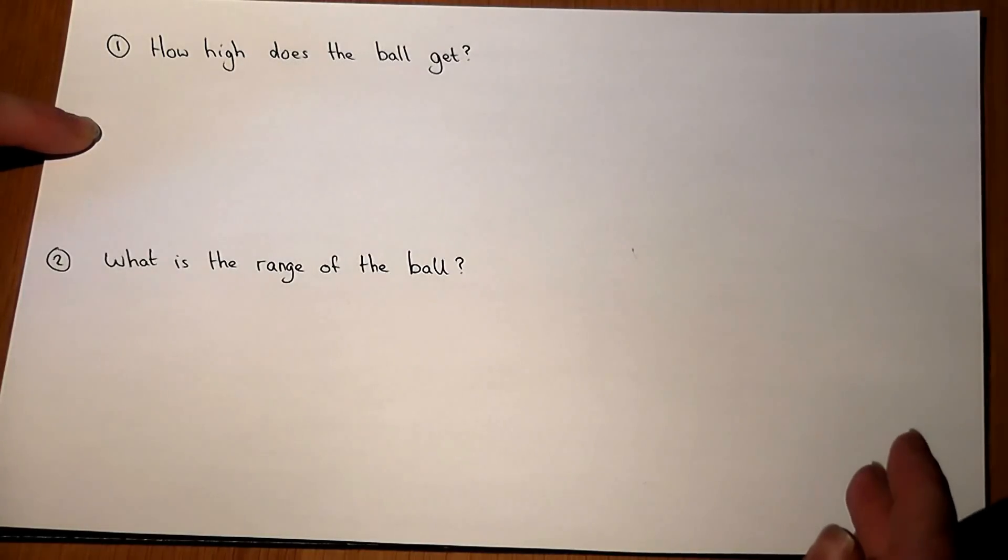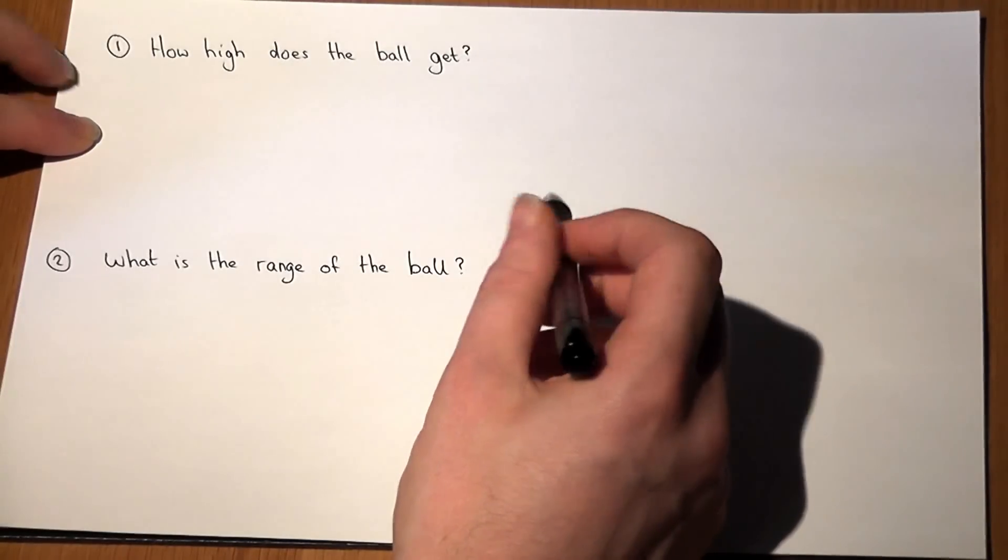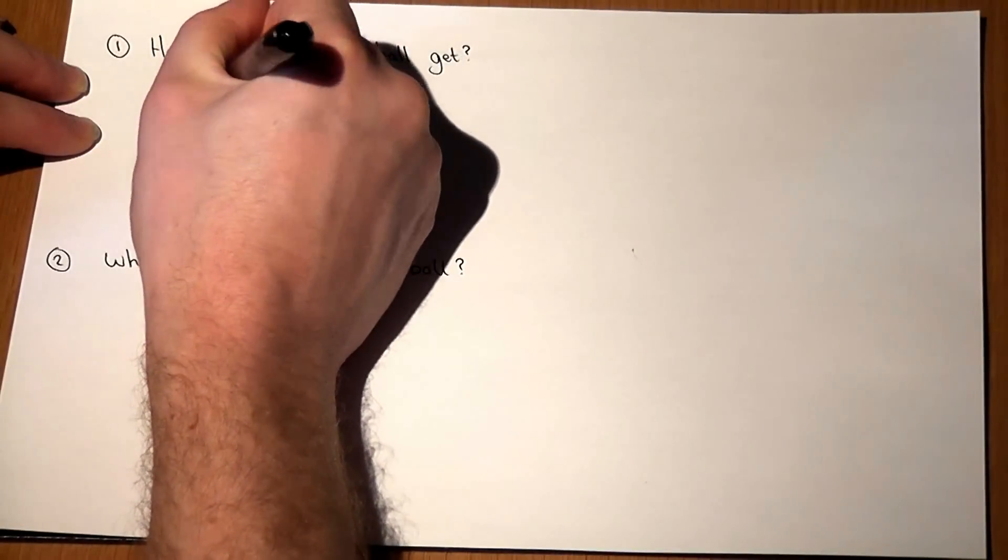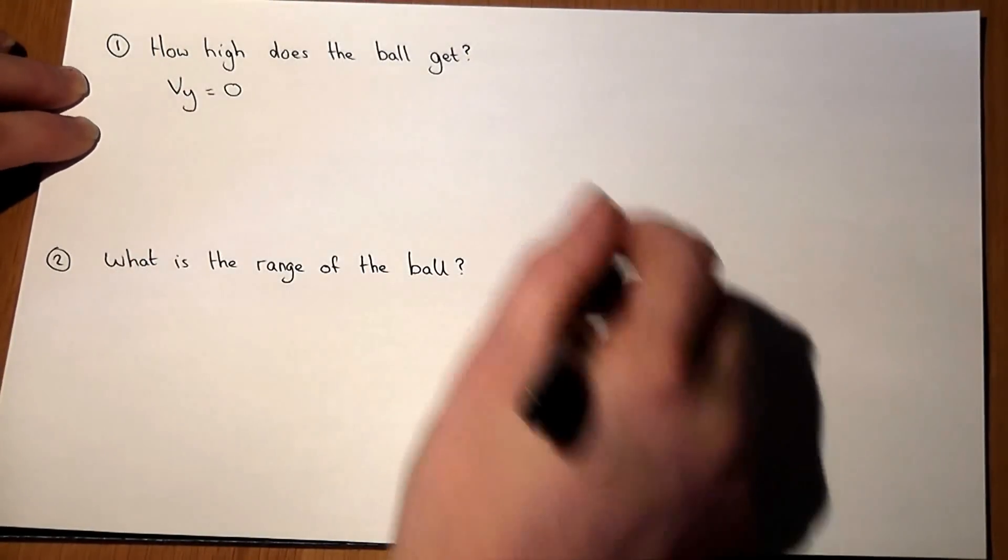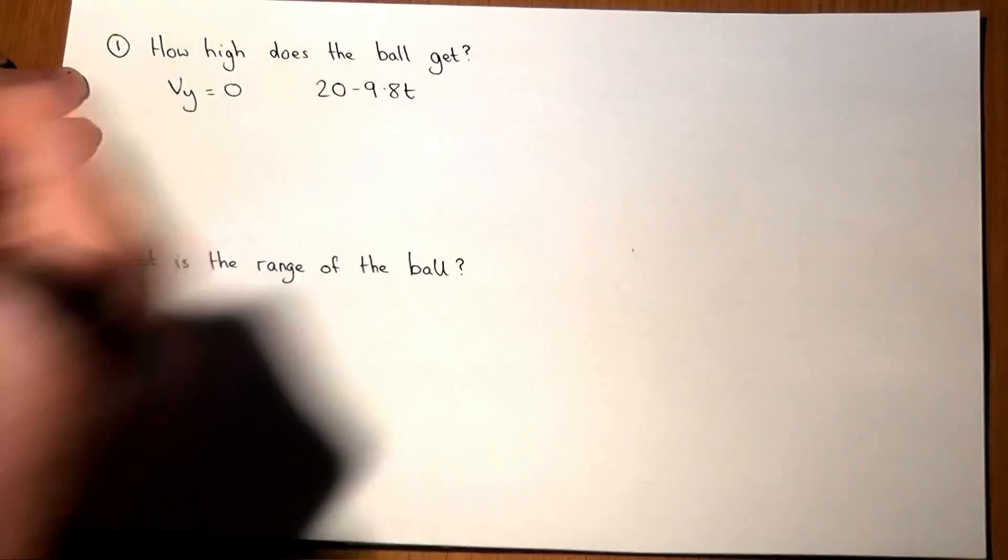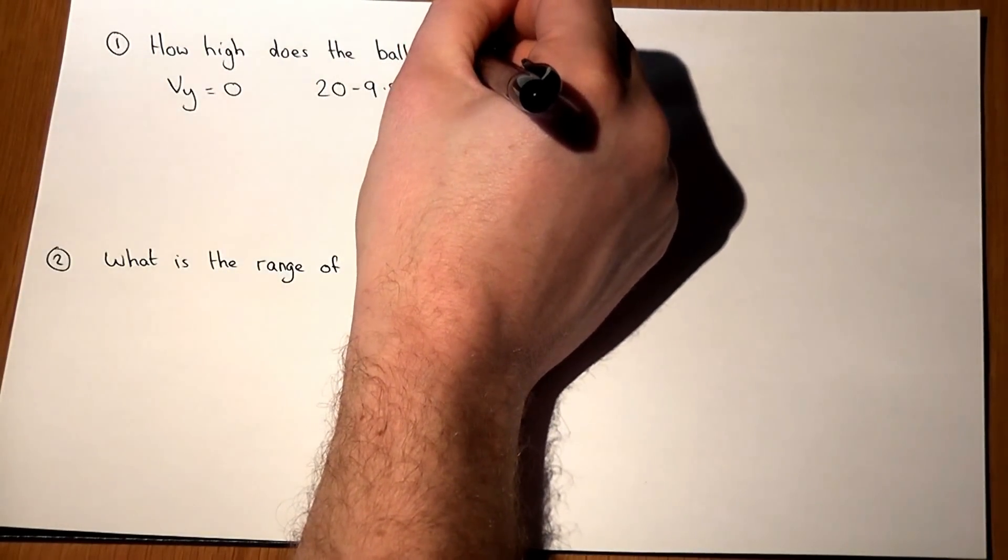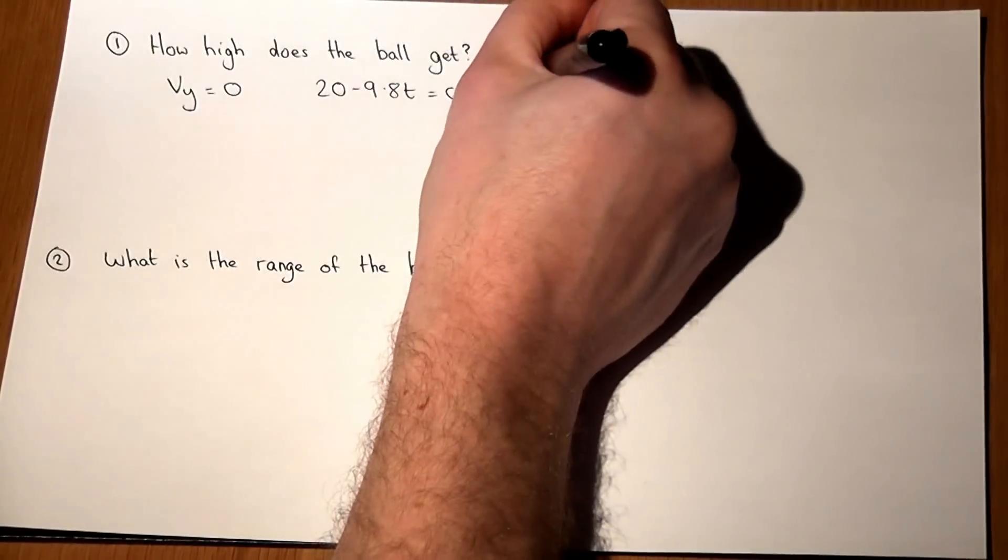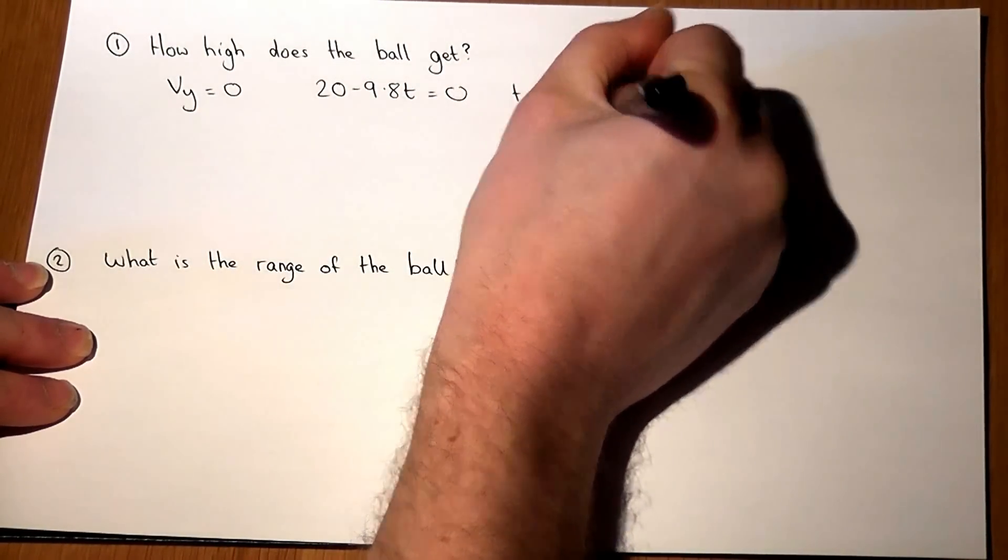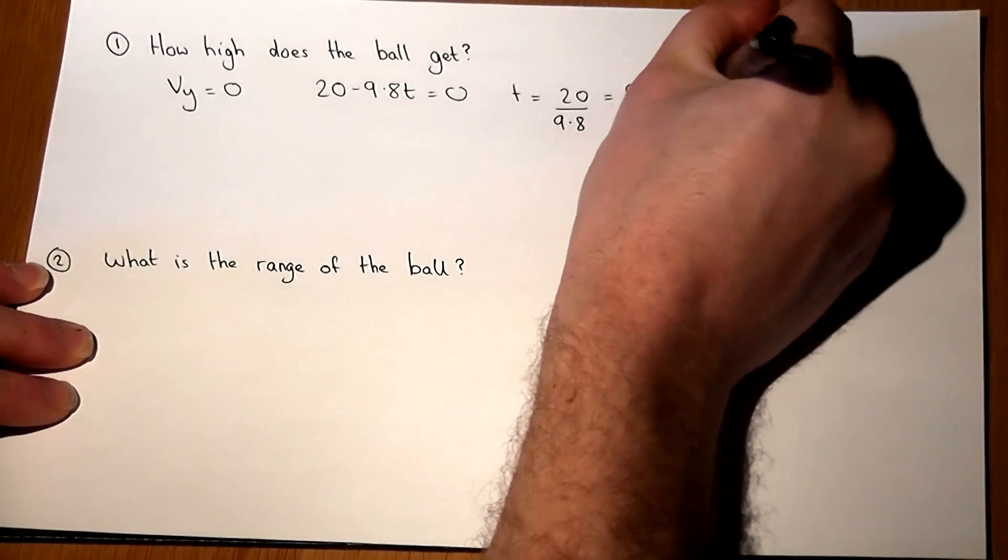Now a ball gets to the top of its flight and stops for an instant, so we get to the top when v_y equals zero. Now v_y was 20 minus 9.8t, so the question is when does that equal zero? Well that equals zero when t equals 20 over 9.8, which equals 2.04 seconds.